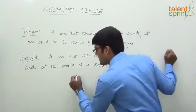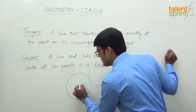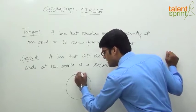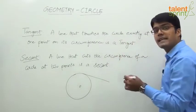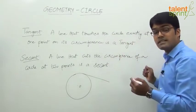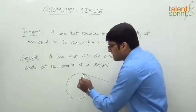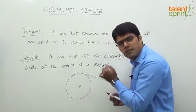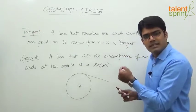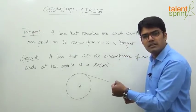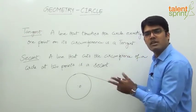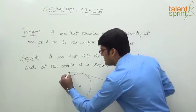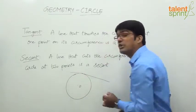If you look at the basic representation of tangent and secant with the help of a diagram: this is a circle with center O. A tangent touches the circumference at any one point. There are infinite tangents — a circle is made up of infinite points, and at every point we can have a tangent. So infinite points means infinite tangents.